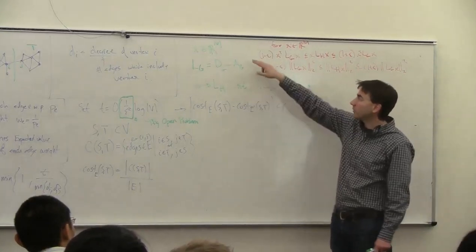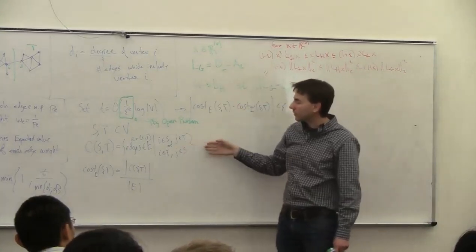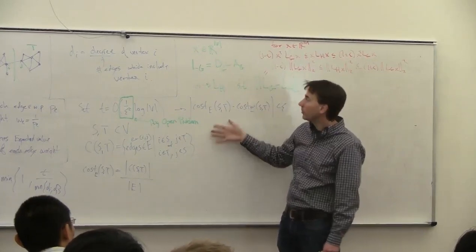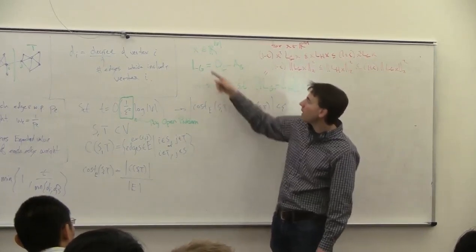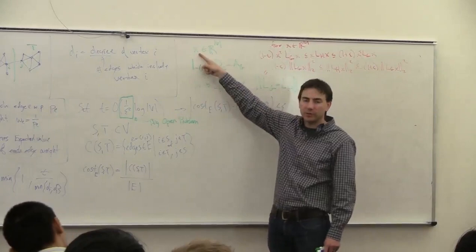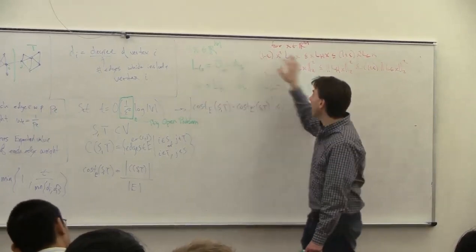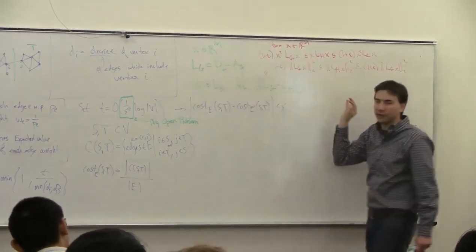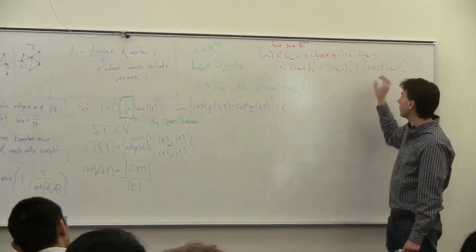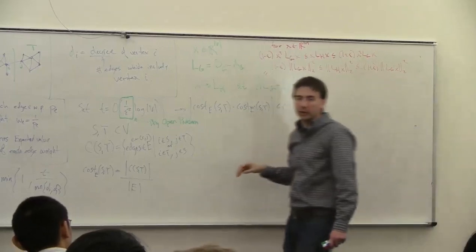This vector — similar to what the graph cut property is saying — requires this vector to be just 0 or 1. But this Laplacian condition allows this vector to be anything, and you still get the same sort of epsilon approximation guarantee.